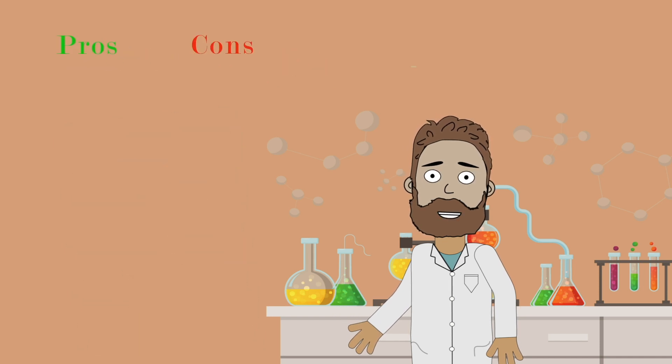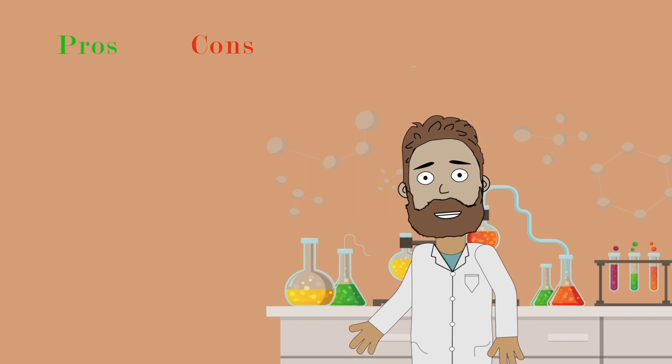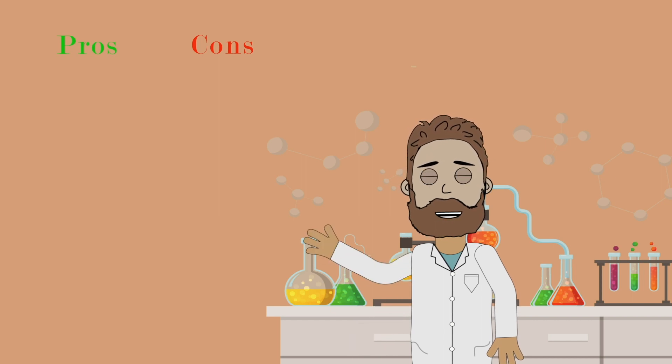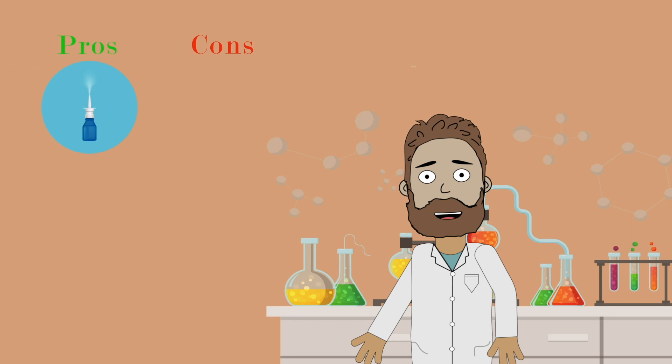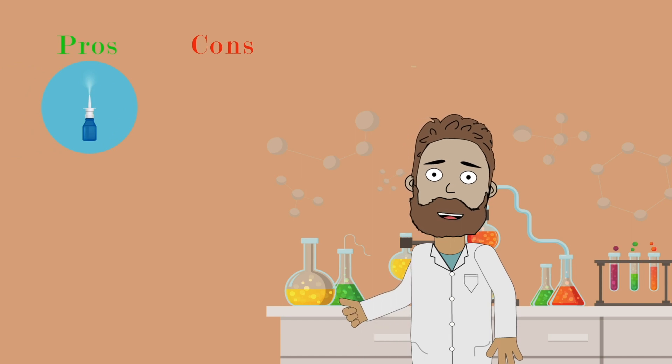Let's now talk about the pros and cons of these vaccines. Firstly, some vectors used can produce a strong immune response, and they may need only one administration, while others can be administered via the respiratory tract without injection, thus mimicking the natural route of infection.